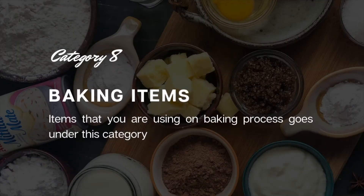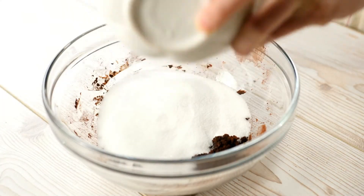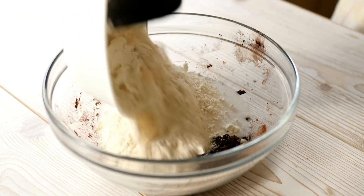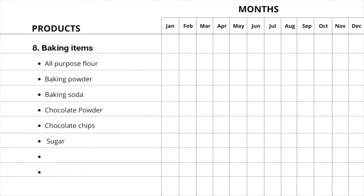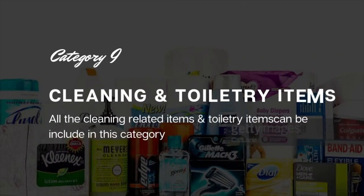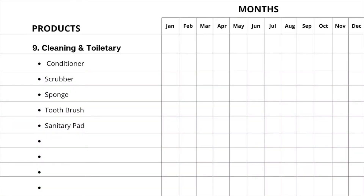The 8th category is baking items — items that you are using in the baking process go under this category. Here is my list of baking items. The 9th category is cleaning and toiletry items — all the cleaning-related items and toiletry items can be included in this category.